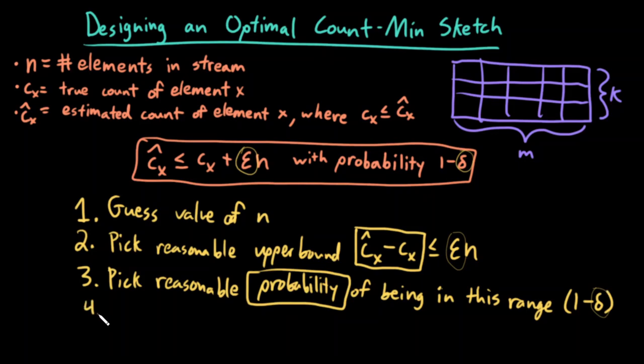This equation, I'm just going to show you. I'm not going to derive it. This is something that you can find in the paper. But the optimal value of m, the number of columns, is the ceiling of the fraction e over epsilon, where e is Euler's number. So e equals 2.71, whatever. It's Euler's number.